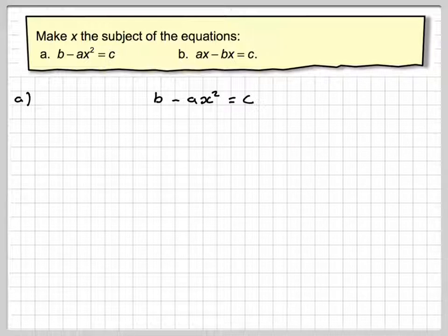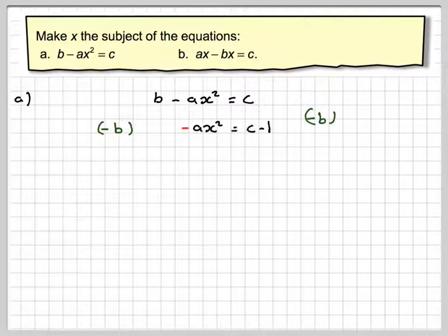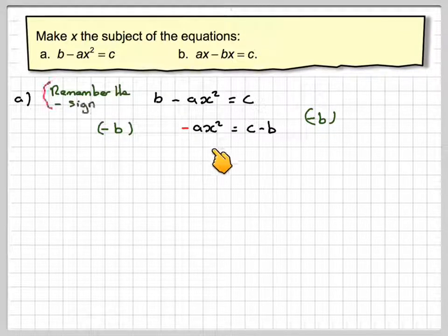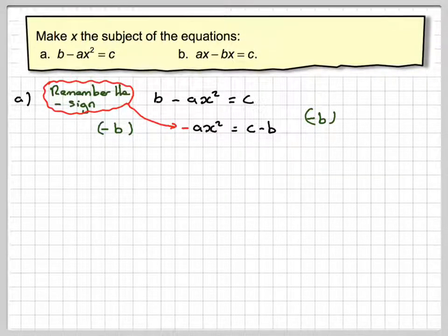First, b minus ax squared is equal to c. Remember balance and opposite - the opposite of adding b is to subtract b from both sides. If you do that, this side will become minus ax squared, and this side will become c minus b. We need to remember that minus sign.